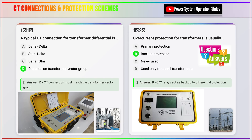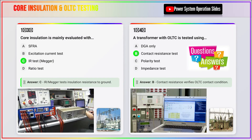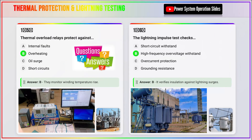Safety Precautions and Best Practices. Safety is paramount when performing transformer testing procedures. Always de-energize and properly ground transformers before testing, and verify isolation with appropriate lockout/tagout procedures. Allow sufficient time for capacitive discharge before making connections, and use proper personal protective equipment (PPE), including insulated gloves, safety glasses, and appropriate clothing. Follow manufacturer's guidelines and industry standards for each test procedure, and maintain proper documentation of all tests for trend analysis and compliance purposes.